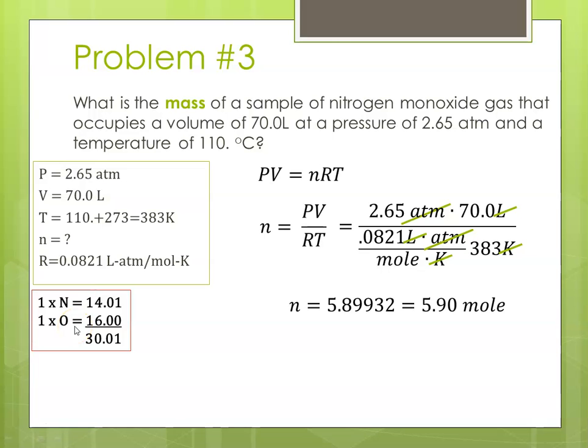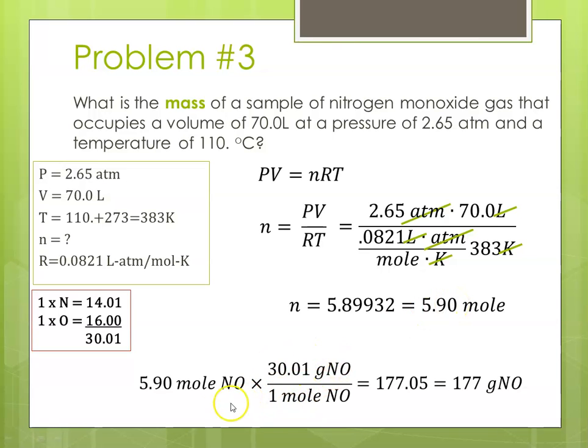Now, we have to do a molar mass box for nitrogen monoxide: 1 times N, 1 times O, there's my molar mass. So now, 5.90 moles is what we solved for, times molar mass. Moles is going to cancel out, my calculator gives me 177.05. I need 3 sig figs, so that will round to 177 grams of nitrogen monoxide. So, sometimes you'll solve for N, and then we'll use molar mass to get to grams.